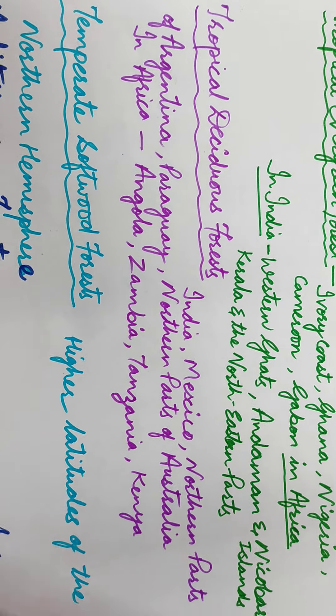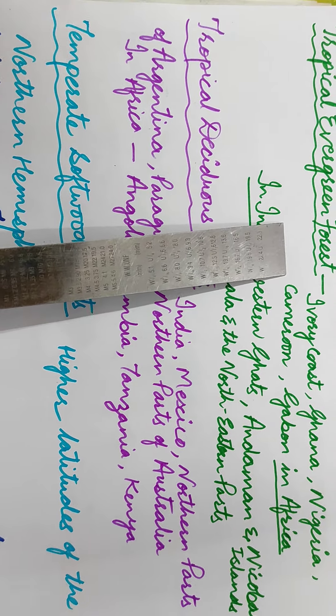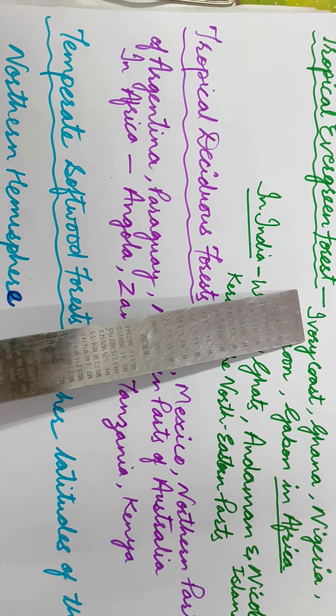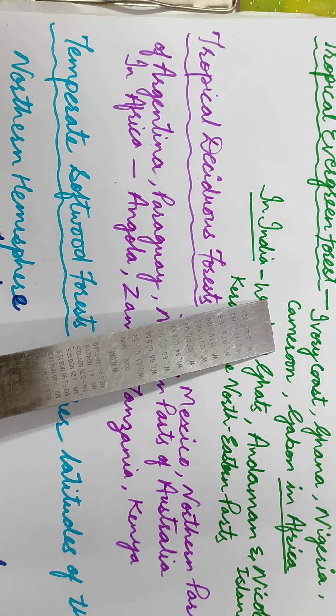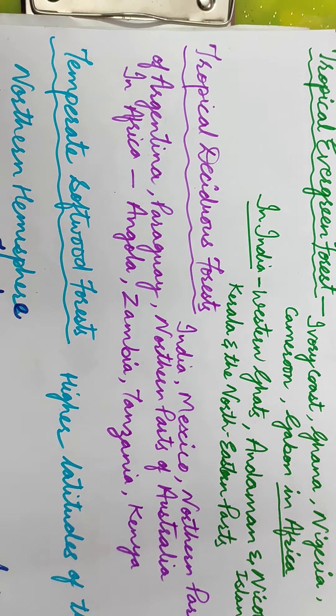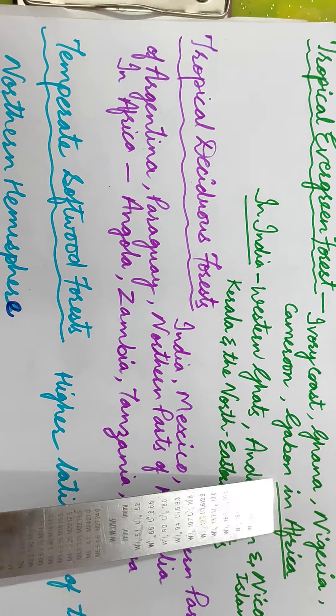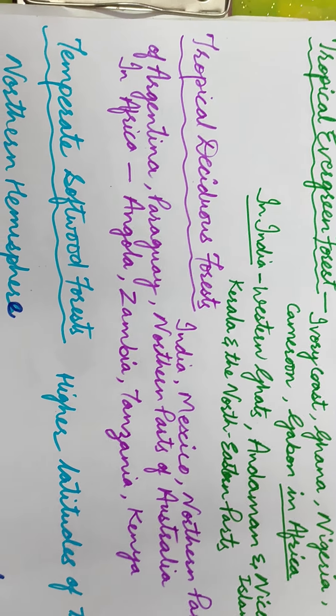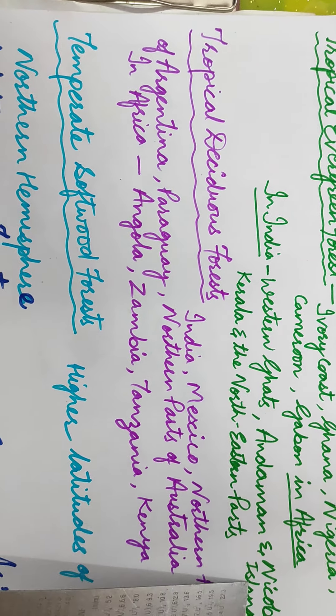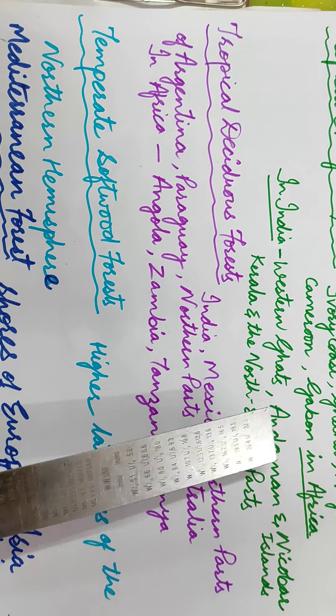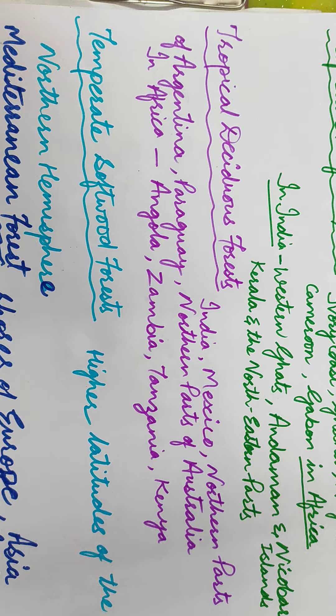discussed the tropical evergreen forests. These forests are in Africa: Ivory Coast, Ghana, Nigeria, Cameroon, Gabon. We have done this yesterday in Africa. Then in India: Western Ghats, Andaman Nicobar Island Group, Kerala and North Eastern parts which are in India.